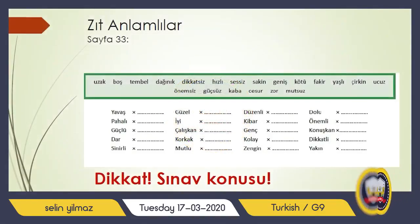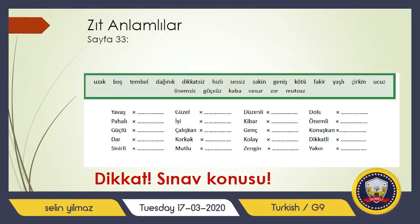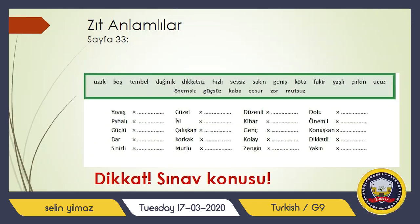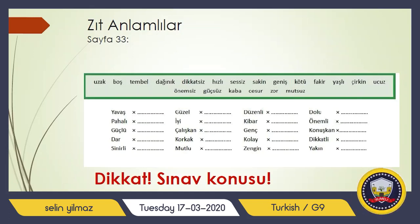You can check your page 33 to learn more information about it. As you know, opposites are things which are completely different from each other and do not share similar qualities, like up and down, left and right, happy and sad. The logic is the same for Turkish.